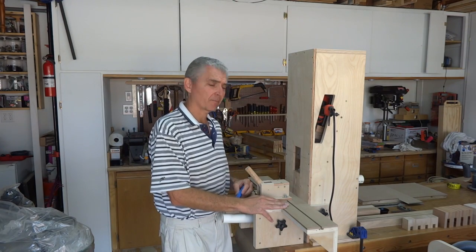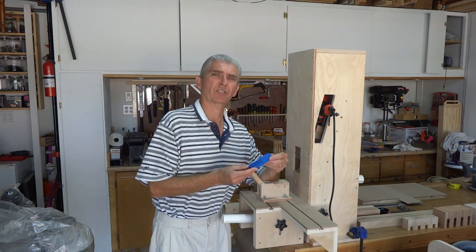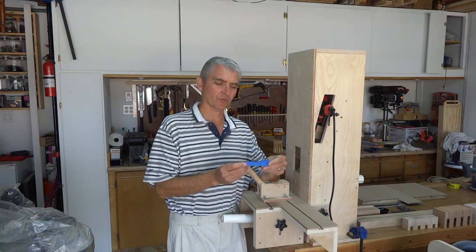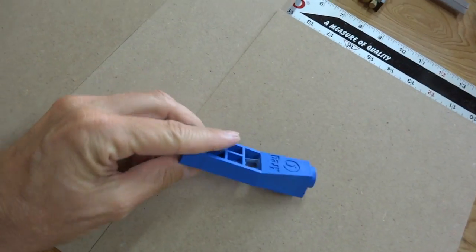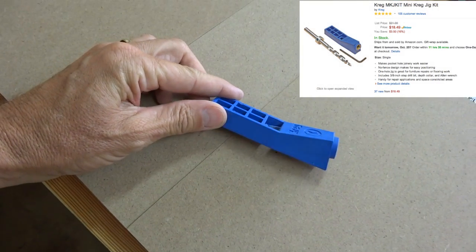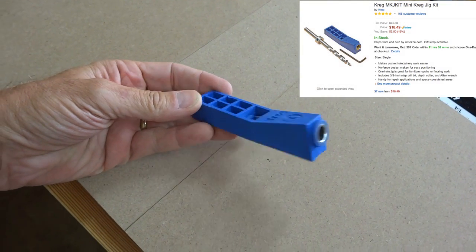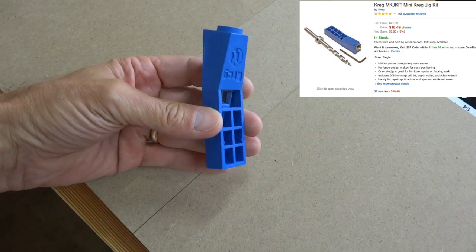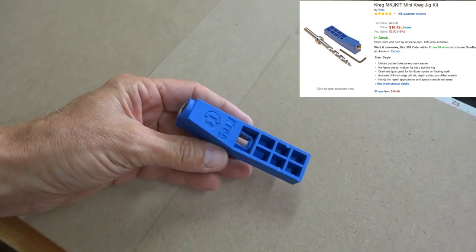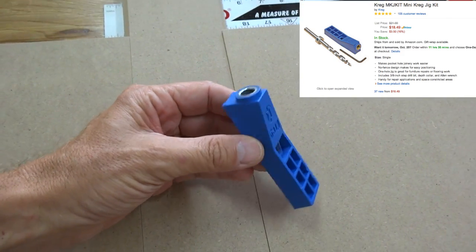Before I designed and built this machine, I used to use this Kreg mini jig to drill all my pocket holes. The Kreg mini kit is the cheapest way to get into drilling pocket holes and can be purchased off Amazon for just under $20. The Kreg mini jig comes with the 15 degree drilling guide and a 3/8 inch drill bit with stop collar.